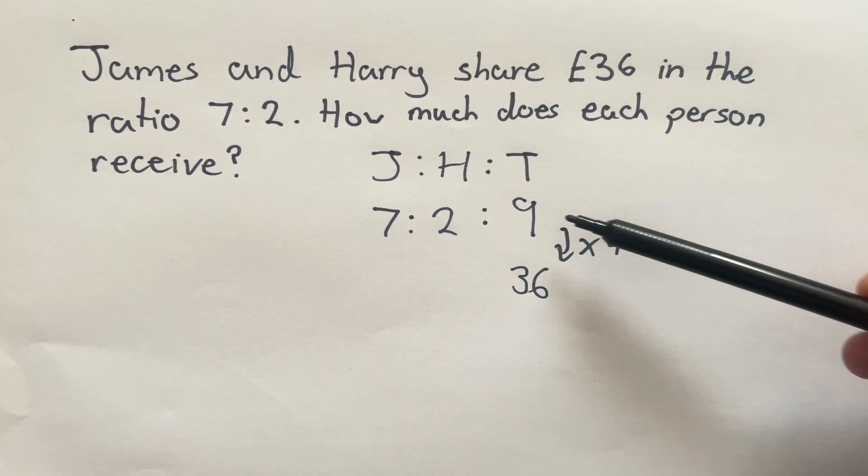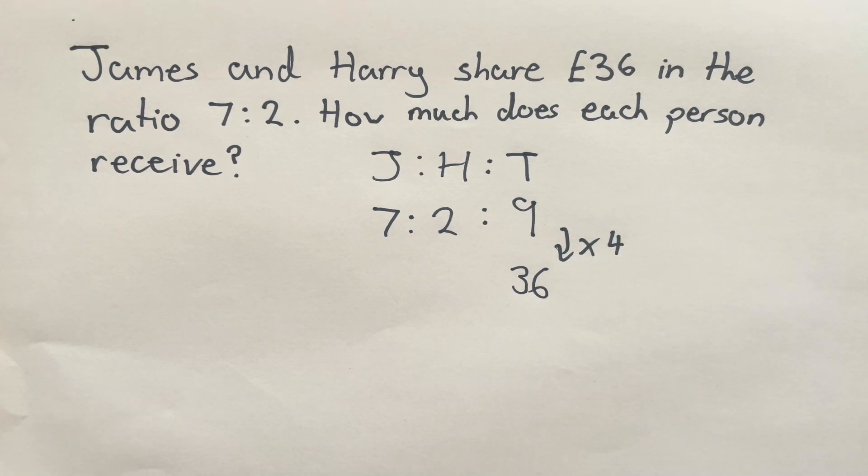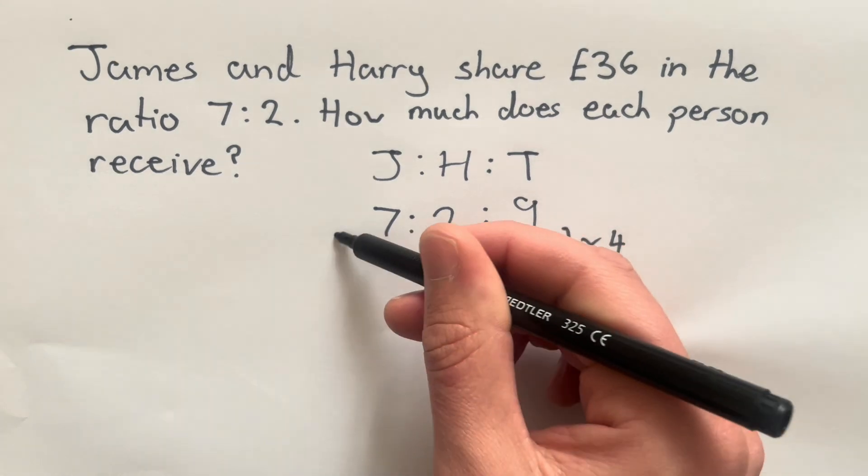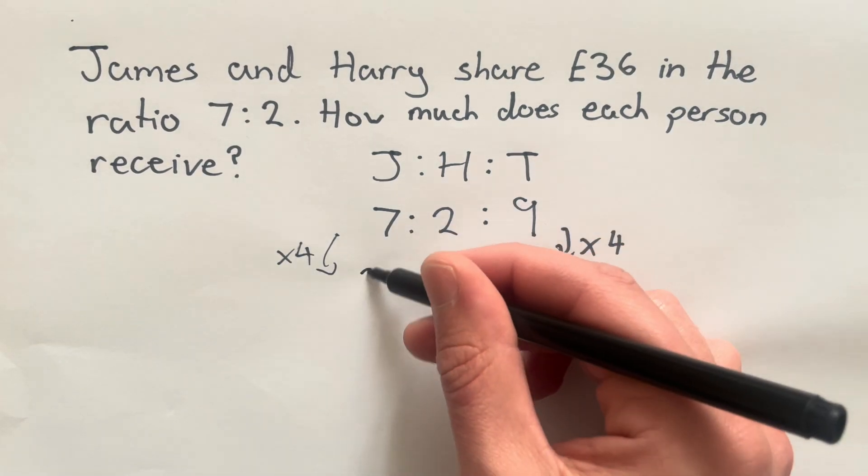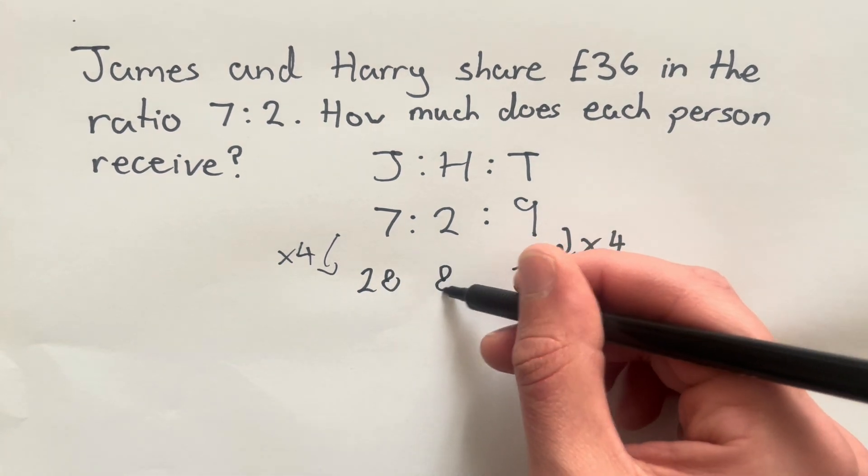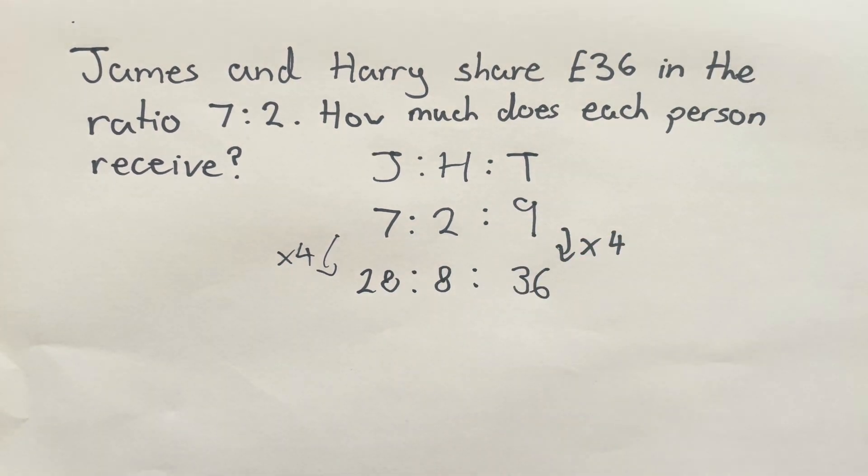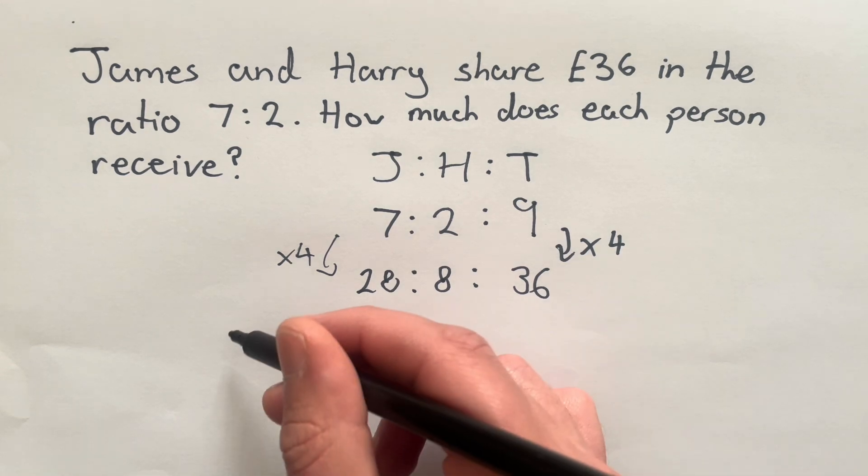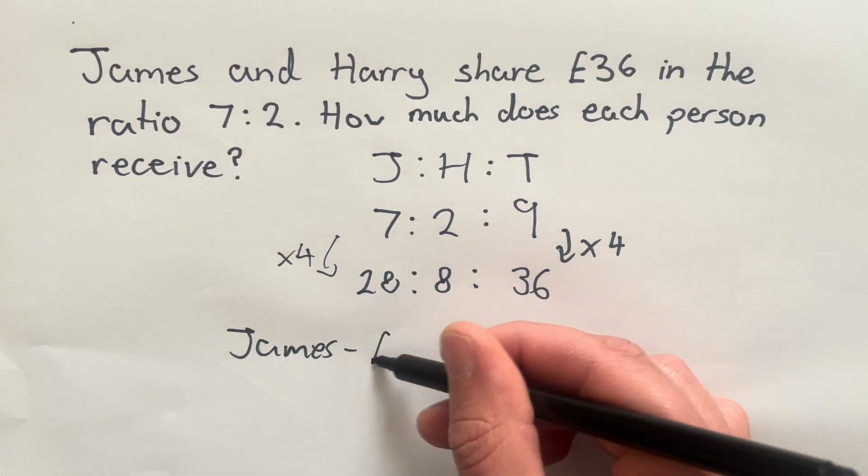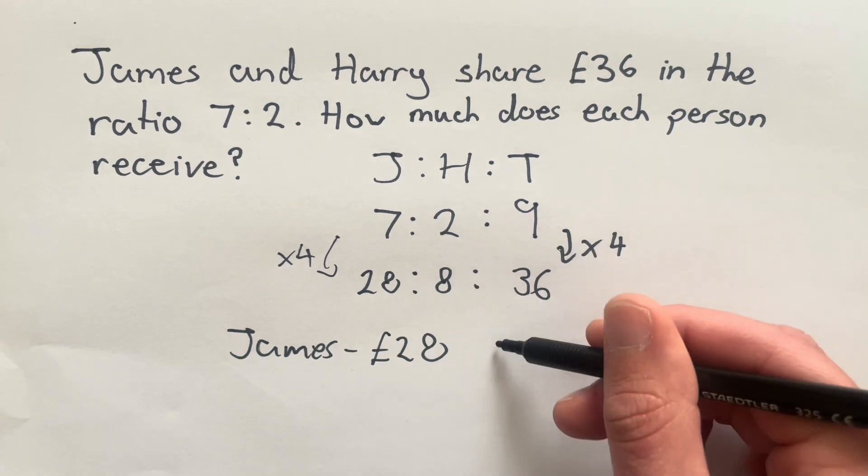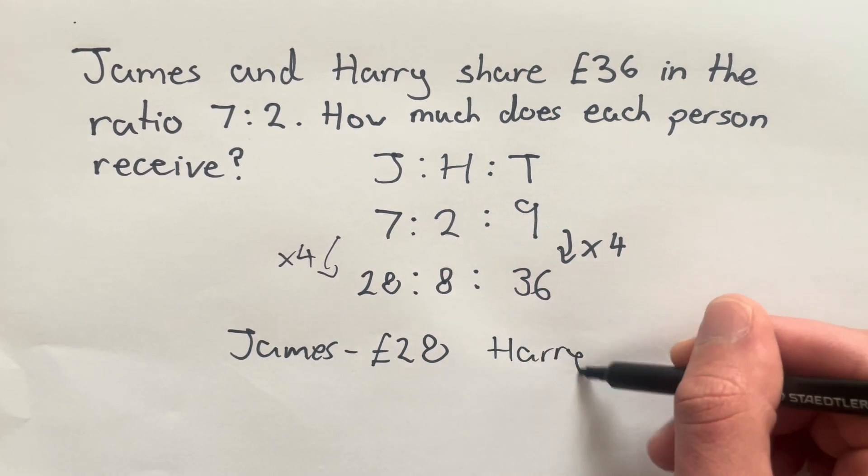So to create an equivalent ratio here, I'm going to multiply everything in this first ratio by four. Seven times four gives me 28. Two times four gives me eight. And what I should notice here is that these two parts of the ratio for James and for Harry add together to make our total of 36. So this gives us our answer. We find that James receives £28 and Harry receives £8.